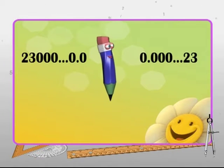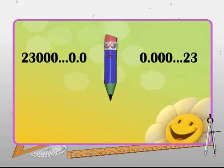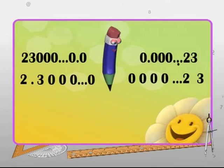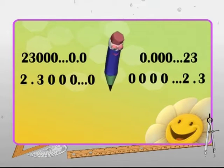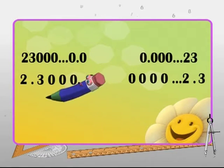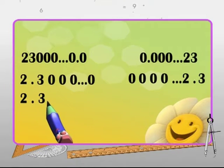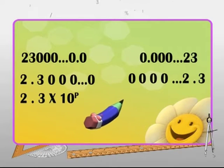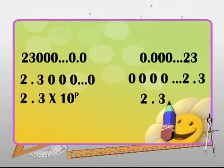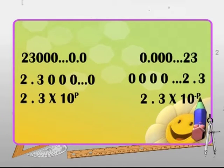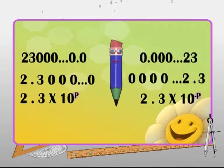Let's see how we can write a number in standard form. First, move the decimal point to the left or the right as necessary to bring one non-zero digit to the left of the decimal point. If you move p places to the left, multiply by 10 to the power of p. If you move p places to the right, multiply by 10 raised to the power of minus p. The value of p depends on the number of places you have moved.